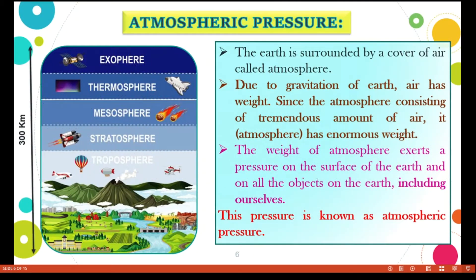Atmospheric pressure. What do we mean by atmosphere? We know that the earth is surrounded by a layer of gases, a cover of air — we call it the atmosphere. Due to gravitation, air has weight. Since the atmosphere consists of a tremendous amount of air, it has enormous weight. This weight of the atmosphere exerts pressure on the surface of the earth and on all objects on the earth, including ourselves. This pressure is known as atmospheric pressure.